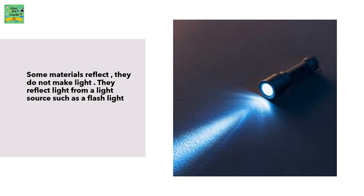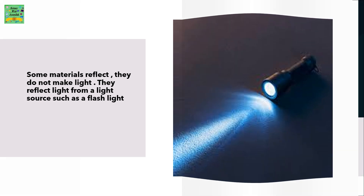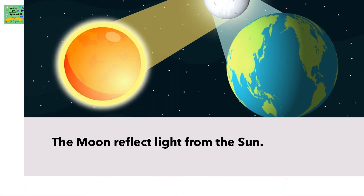Some materials reflect. They do not make light — they reflect light from a light source such as a flashlight. The moon reflects light from the sun.